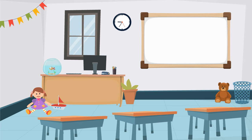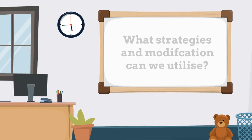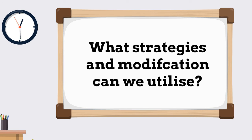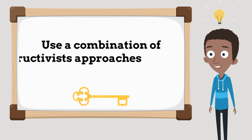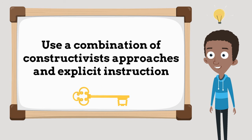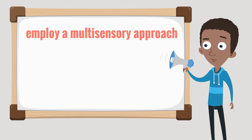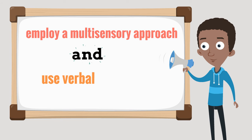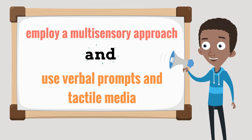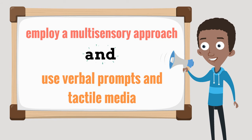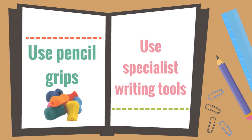Now that we know the range of problems experienced by students with writing difficulties, what strategies and modifications can be utilized to assist them? The key is to use a combination of constructivist approaches and explicit instruction. Employ a multi-sensory approach to teaching handwriting and letter formation. Use verbal prompts and provide a range of tactile media to practice forming letters and words. Give students pencil grips and specialist writing tools to assist with control in maintaining the correct grip.